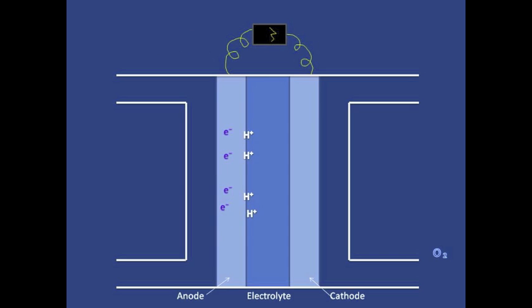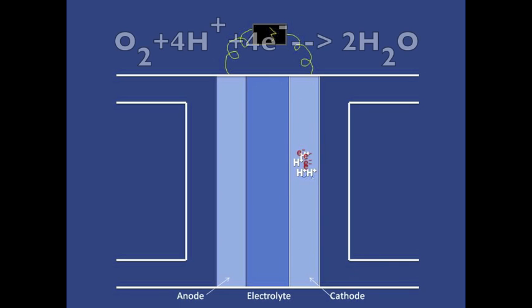When the electrons pass through the circuit, it produces the energy needed to power the RV. The electrons and positively charged hydrogen ions, along with the oxygen atoms, then unite in the cathode to produce water.